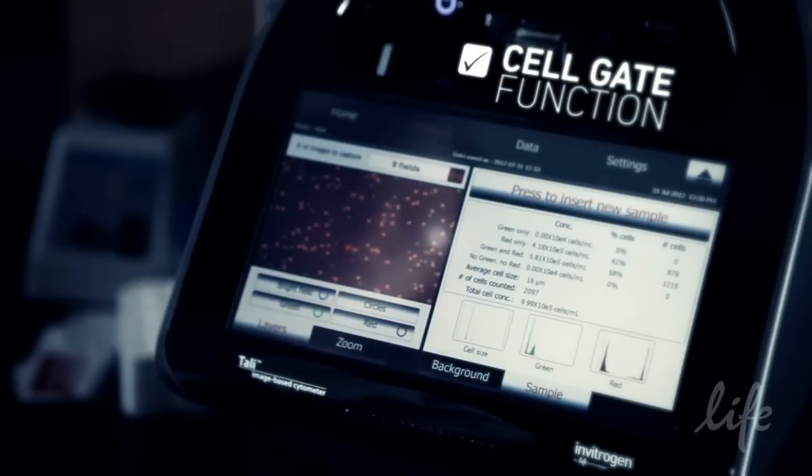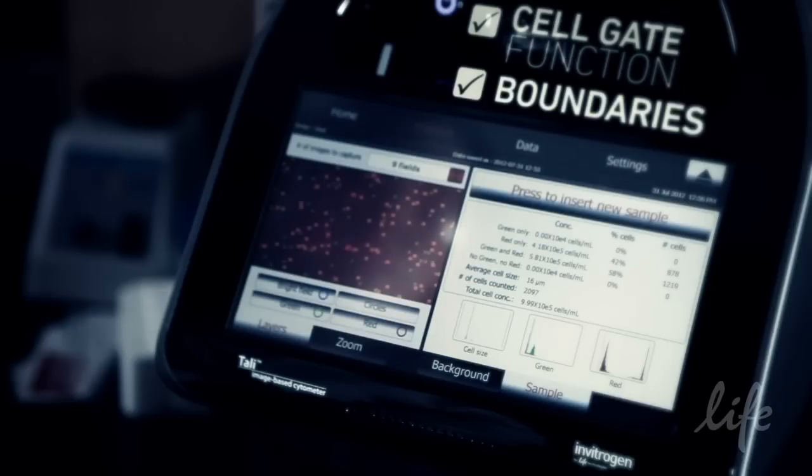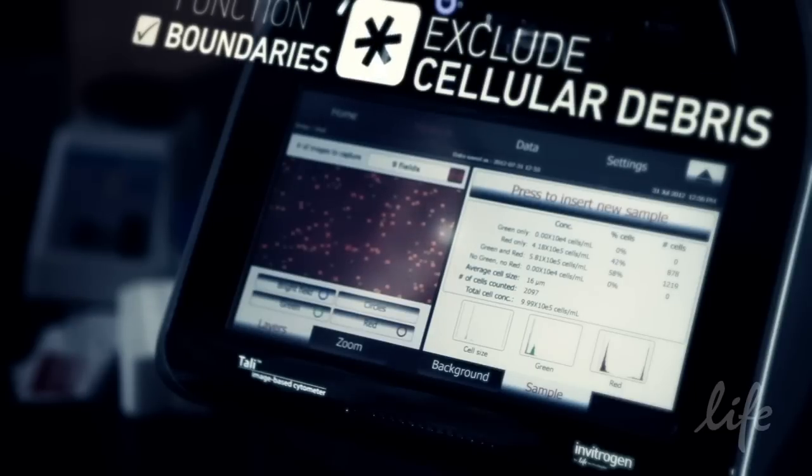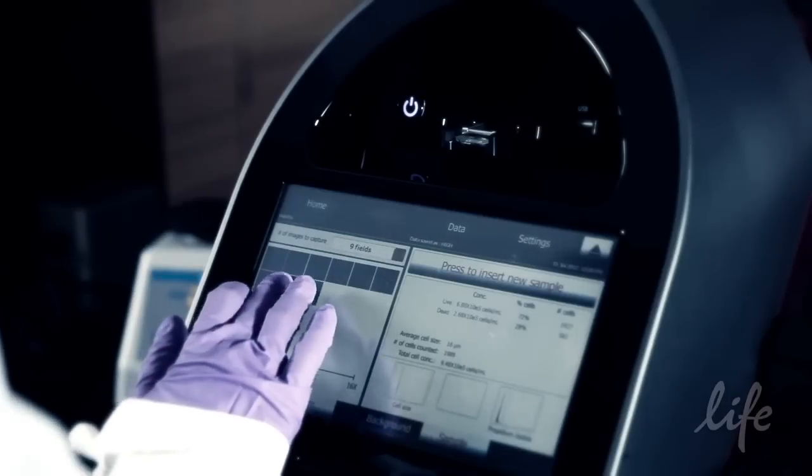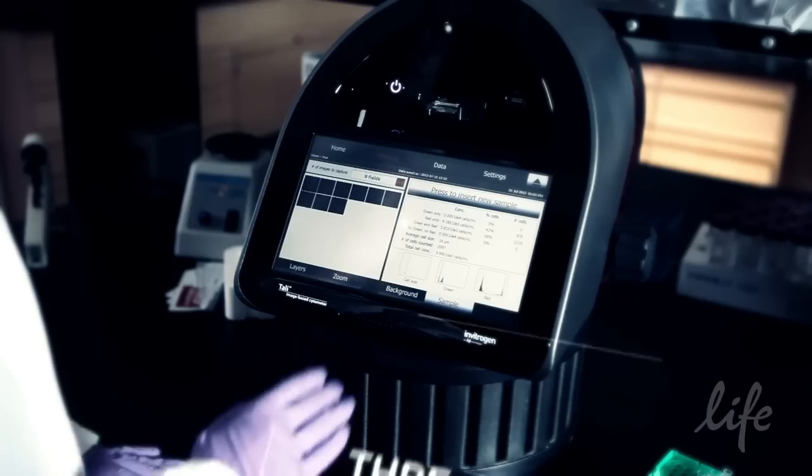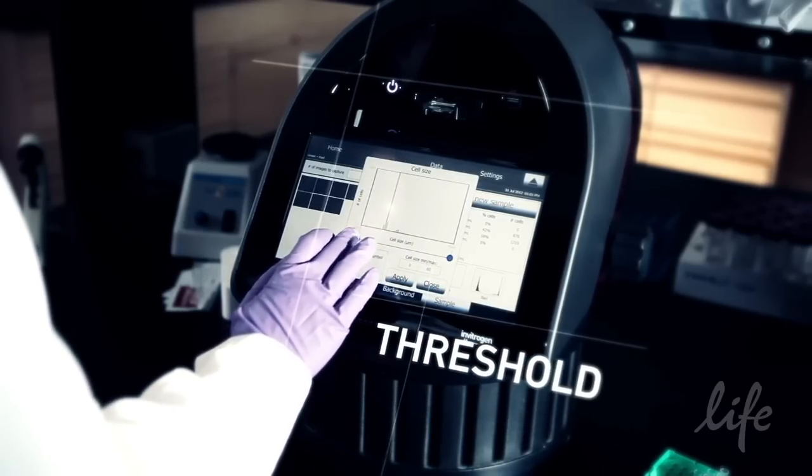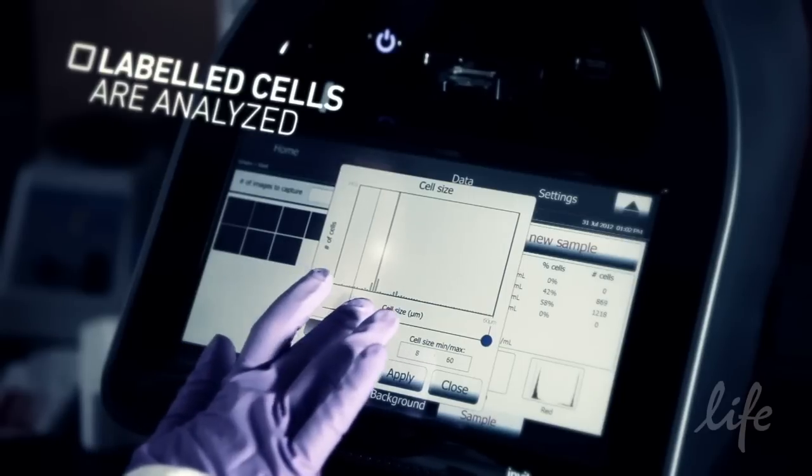Using the cell gate function, boundaries for cell size can be established to exclude cellular debris from the count. In addition, the fluorescence detection threshold can be set based on an unstained control to ensure only labeled cells are analyzed.